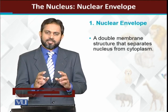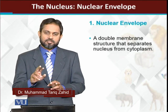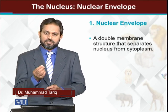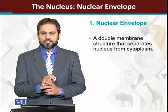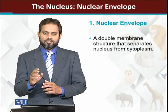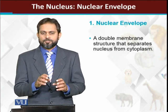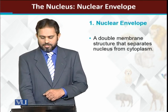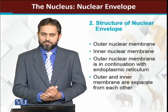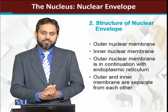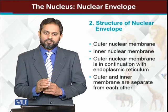The nucleus has an outermost boundary which is a double membrane structure, unlike the cell membrane which is a single membrane structure. The nuclear envelope consists of two membranes — the outer and inner nuclear membranes — and it separates nuclear material from cytoplasmic material. Structurally, the nuclear envelope has these two membranes.